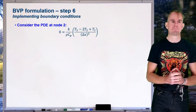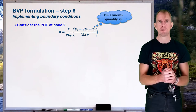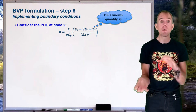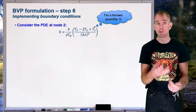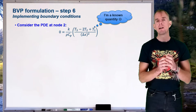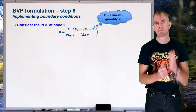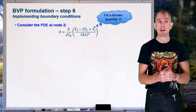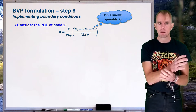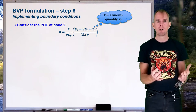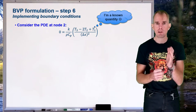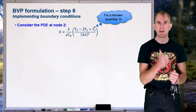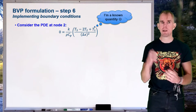At node 2 — not node 1 — central differencing gives nearest neighbours 1 and 3, so we get (T_3 − 2T_2 + T_1)/Δx², which requires no out-of-domain nodes. Importantly, we know T1: it's our specified hot temperature. We don't need to solve a PDE at node 1 — it's simply constant. So the first node we solve for is node 2. Constant temperature boundary conditions are straightforward to implement.